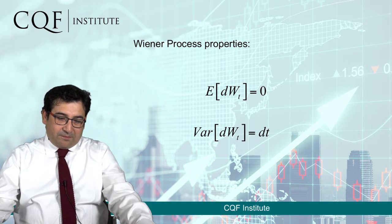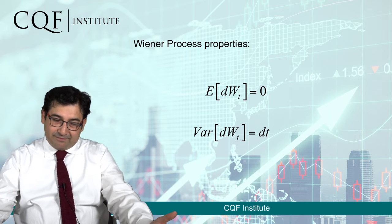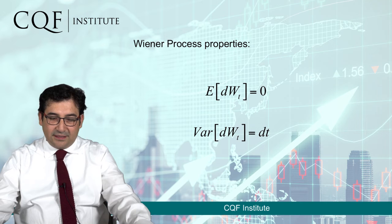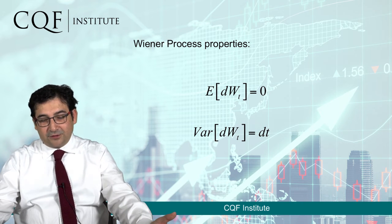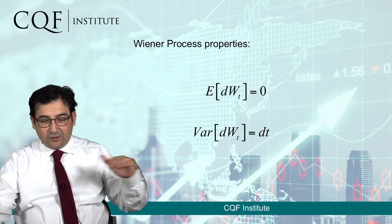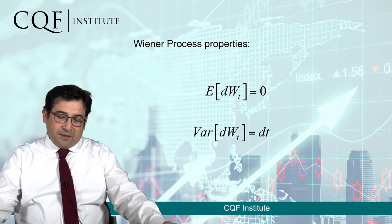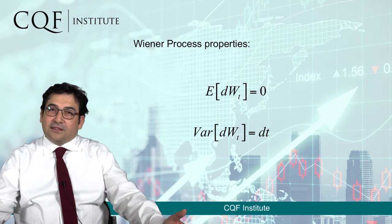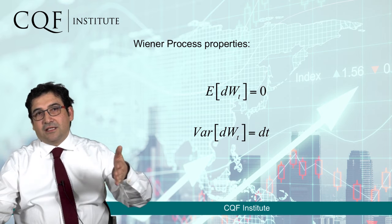The Wiener process has two important properties. First, the expectation of the Wiener process is zero — it therefore tends to be stable over time around the value of zero. Second, its variance tends to equal dt, or delta t, which is the change in time between one observation and the next.